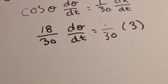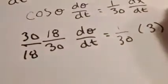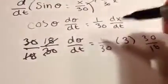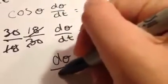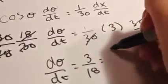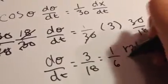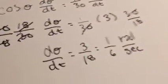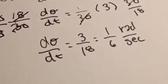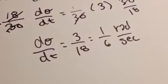Now to solve this, we multiply both sides by 30 over 18. Things cancel — the 18s and 30s — leaving dθ/dt all by itself. So dθ/dt equals 3 over 18, which simplifies to 1/6 radians per second. Because don't forget, this is an angle measure — it's the rate of change of the angle, how fast the angle is changing as the ladder leaves the house.